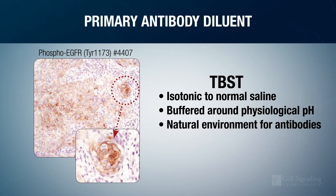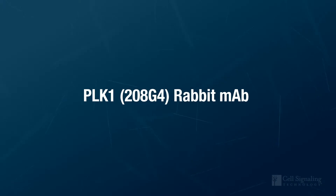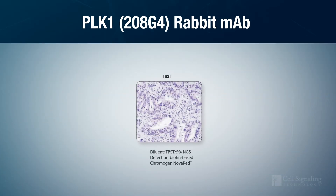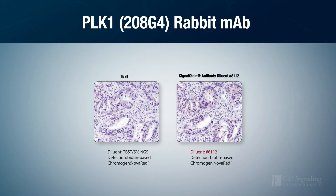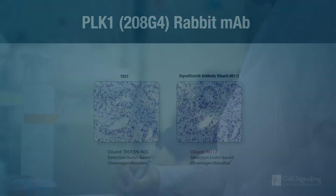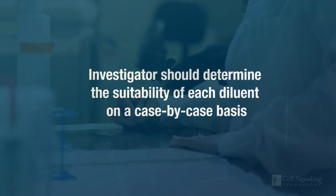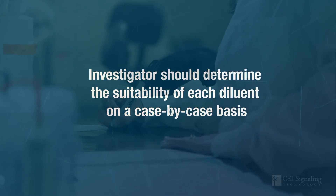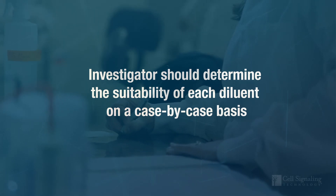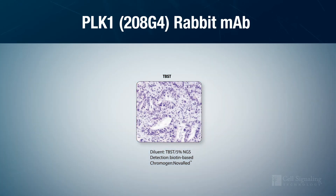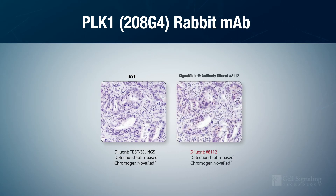But it doesn't work for all antibodies. For example, PLK-1 rabbit monoclonal antibody produced limited signal when it was diluted in TBST, but the signal slightly improved when we diluted it in signal-stained antibody diluent. Since each commercially available diluent mixture is proprietary, the investigator will need to determine the suitability of each on a case-by-case basis. For PLK-1, changing the diluent improved the signal, but only slightly.